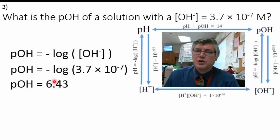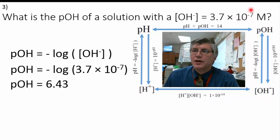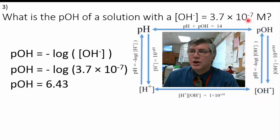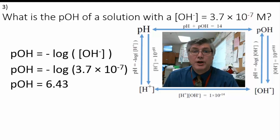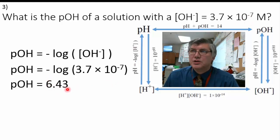The first digit is really only the magnitude — kind of the way 10 to the negative 7 is the magnitude of the molarity. This is the magnitude of the pOH, and these digits after the decimal are the significant figures.